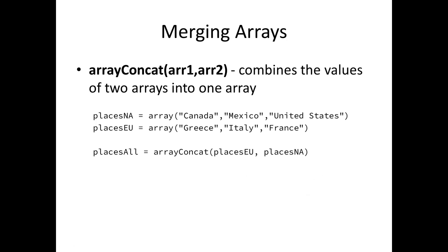Merging arrays is the opposite of splitting. This function takes two arrays and returns one combined array. It doesn't affect your original arrays, but creates a new array containing all those values. What it does is append all entries from the second array to the first array and return that as your new array.